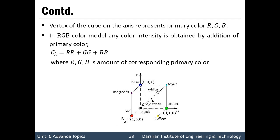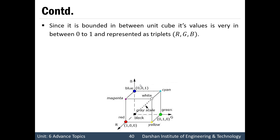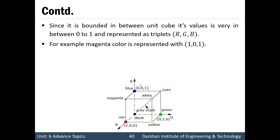In the RGB color model, any color intensity is a combination of primary colors: C(λ) = R·R + G·G + B·B, where R, G, B are amounts of the corresponding primary color. Since it is bounded within the unit cube, its value is between 0 and 1, represented as a triplet — one for red, one for green, one for blue. For example, magenta color is represented as (1, 0, 1) because magenta requires red and blue but no green, so green is 0 and red and blue are both 1.